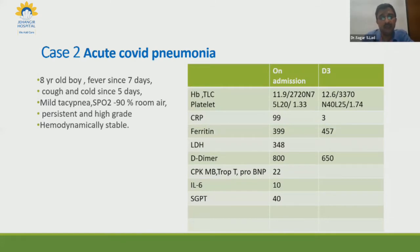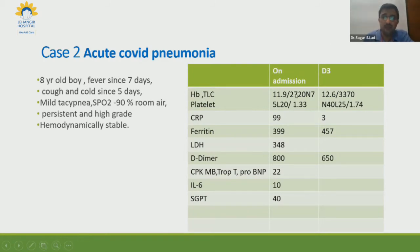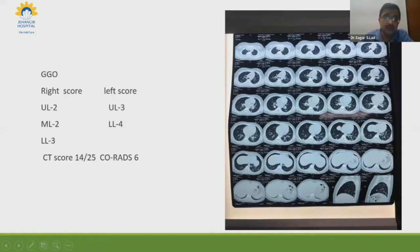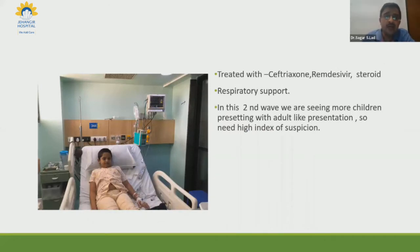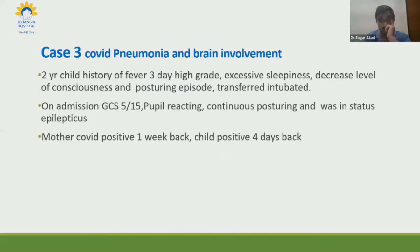The second case is an eight-year-old child with fever for seven days, cough and cold for five days, mild tachypnea, low saturation, and very high-grade fever not settling with routine medication. The child was hemodynamically stable. WBC count was on the lower side with ferritin 399, high CRP, high LDH, and high D-dimer. CT ground glass opacity score was 14 out of 25. The child was treated with ceftriaxone, remdesivir, steroids, and respiratory support. In the second wave, we are seeing children who present like adults with pneumonia, requiring a high index of suspicion.